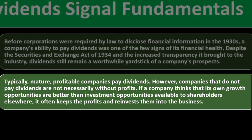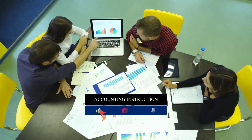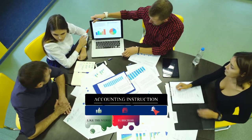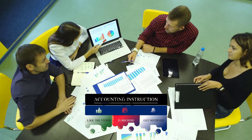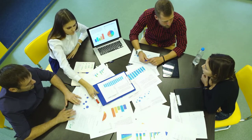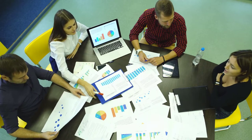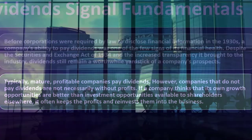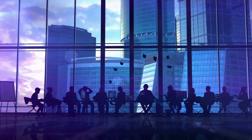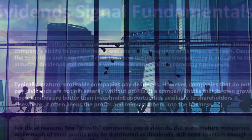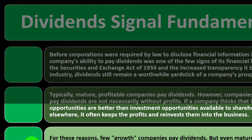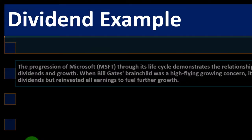If a company thinks its own growth opportunities are better than investment opportunities available to shareholders elsewhere, it often keeps the profits and reinvests them into the business. From the shareholder's perspective, if the company can take that money and invest in machinery, equipment, or factories that will make more money than they could get by receiving a dividend and investing it elsewhere, then it would make sense for the company to invest the money — which would increase the stock price. For this reason, few growth companies pay dividends. But even mature companies, while much of their profits may be distributed as dividends, still need to retain enough cash to fund business activities.